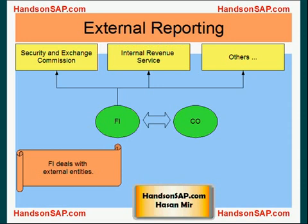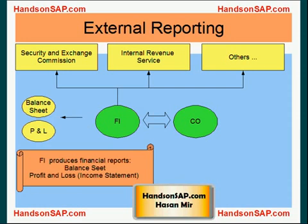FI mainly deals with external entities like the Securities and Exchange Commission, the Internal Revenue Service, and other entities external to your organization. Reports that come out of the FI module include balance sheet reports and P&L — or profit and loss statements, also known as income statements. These reports go to external entities.